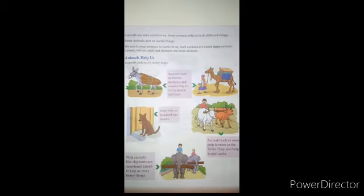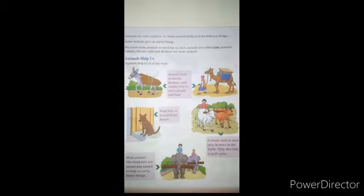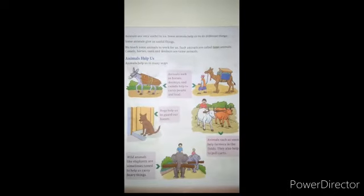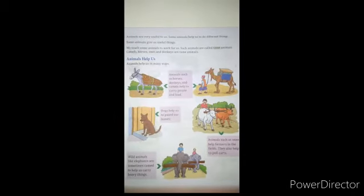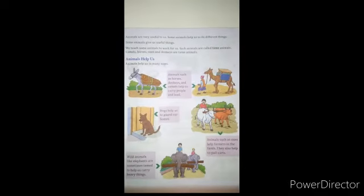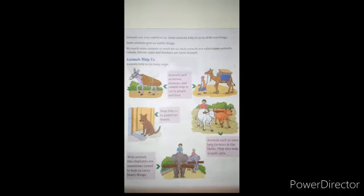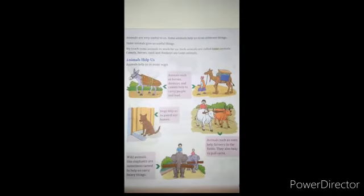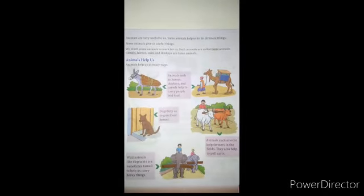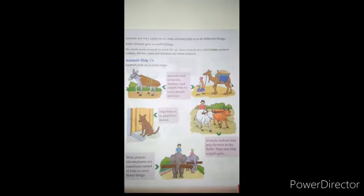Animals are very useful to us. Some animals help us to do different things. Some animals give us useful things. We teach some animals to work for us. Such animals are called tame animals. Animals we train and keep as pets are called tame animals, like camel, horse, oxen, and donkey.